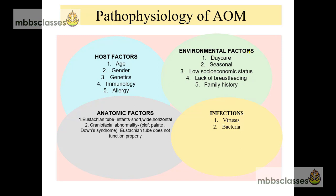Under the environmental factors, the factors responsible include daycare of small children, because in daycare the risk of cross infection is higher. It is seen more during the winter season because in winter the rate of viral infection is more. Acute otitis media is associated with low socioeconomic status due to increased rate of infection from overcrowding and poor access to healthcare. Lack of breastfeeding is associated with high risk of developing acute otitis media because breastfeeding protects against colonization of bacteria. Six months of exclusive breastfeeding is recommended. Family history is another risk factor.